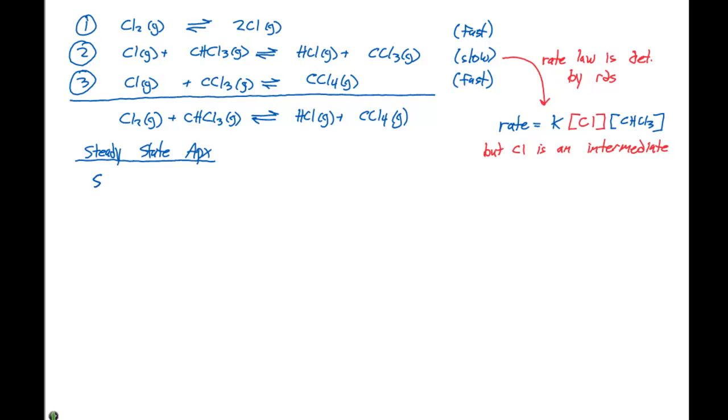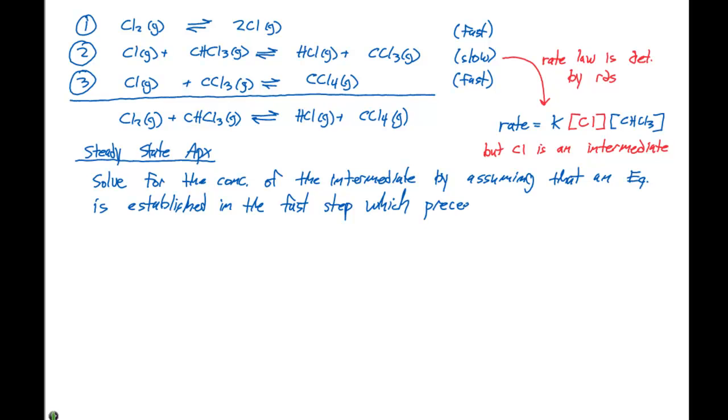When you use the Steady State Approximation, you must solve for the concentration of the intermediate by assuming that an equilibrium is established in the fast step which precedes the slowest step.